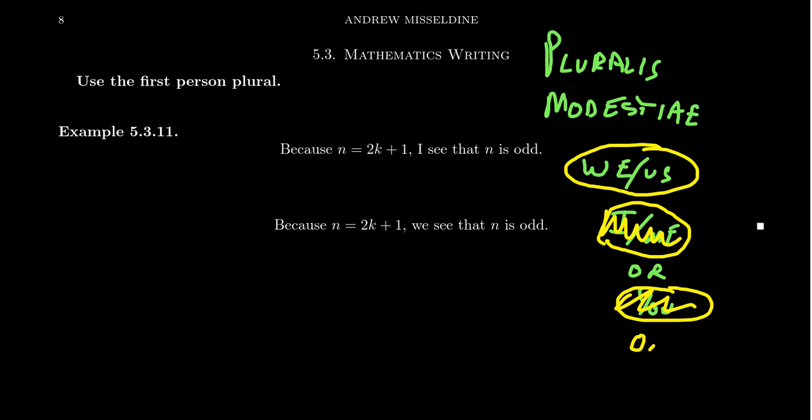Some people try to use the words like one, like we could say something like, oh, and by this result, one can then see that the statement P is true. You can do that.